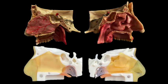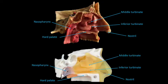The model was designed to include main anatomic landmarks: facial skin, nasal bones including turbinates, hard palate, and nasopharynx.